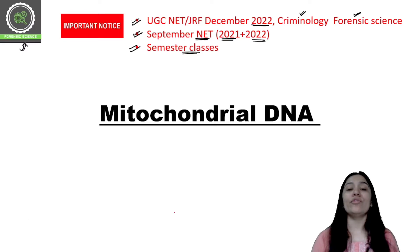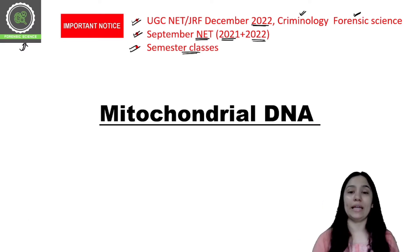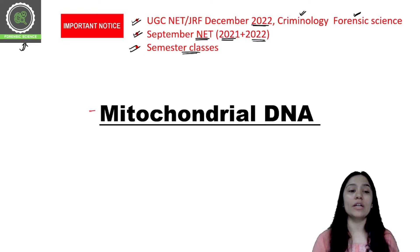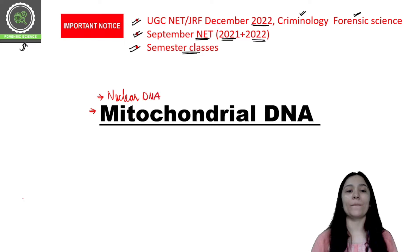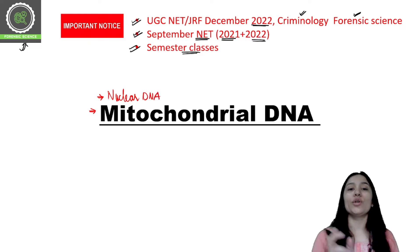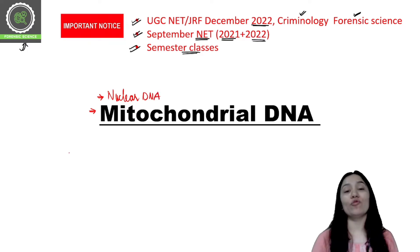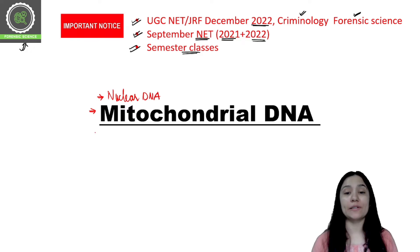Mitochondrial DNA is a DNA other than nuclear DNA. We have two types of DNA: first, nuclear DNA, and then mitochondrial DNA. Nuclear DNA is found in the nucleus, while mitochondrial DNA is found in the mitochondria.